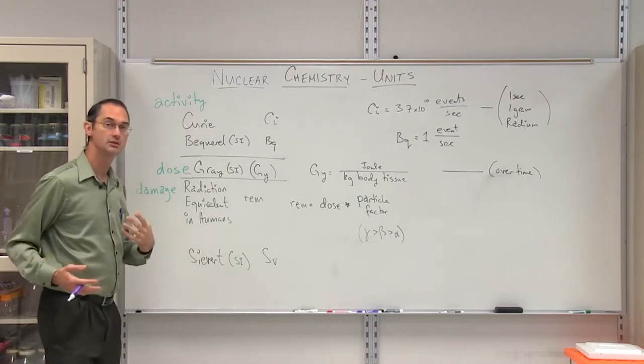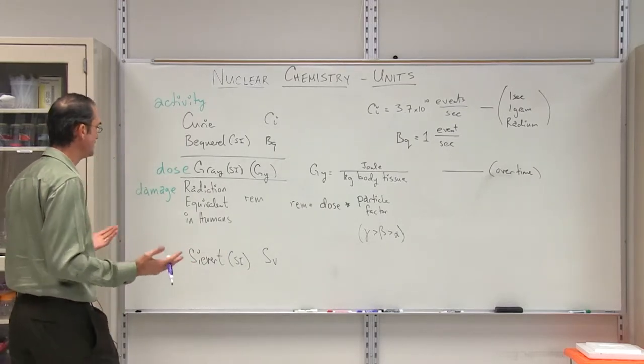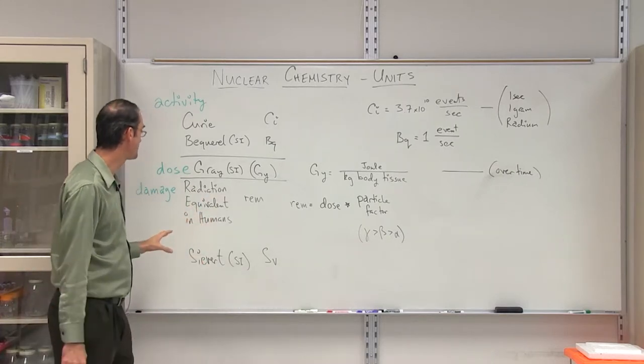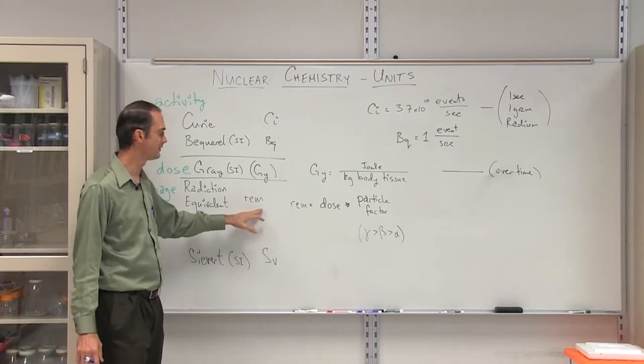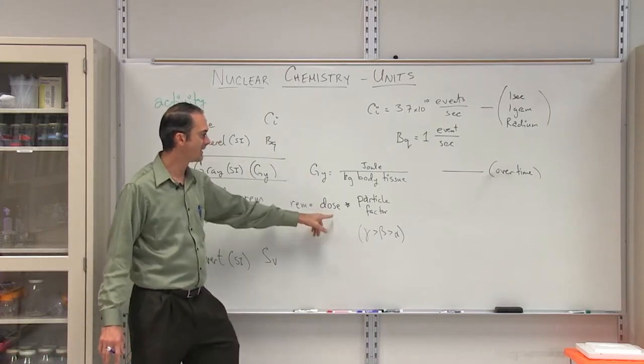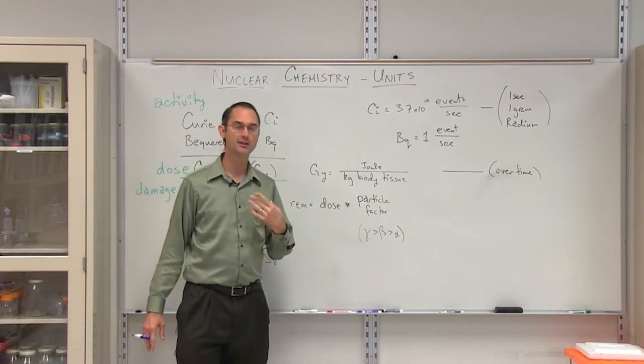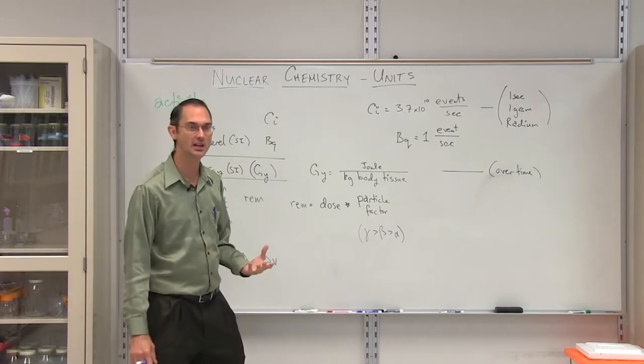The next thing we get onto is probably the reason why we're mostly concerned, which is the damage. And the damage occurs, in this case, through the radiation equivalent in humans, or the REM, a term that we're probably very familiar with. The REM equals the dose, which is expressed in GRAYs, times the particle factor.